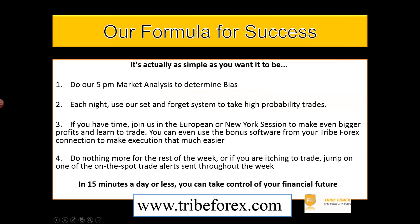Let's take a look at how this works and how we make money in this market. Our formula for success is that we do a 5 p.m. market analysis to determine what we call our bias. A bias is essentially the high probability of price going either up or down on a currency pair. If there's a high probability price will go up, we call that a buy bias; if it will go down, we call that a sell bias. There are also times where we have what we call a consolidation bias.